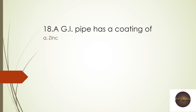Next question: The GI pipe has a coating of — zinc, lead, silver, or aluminum? GI pipe stands for Galvanized Iron pipe, and the coating is done with zinc. The right answer is zinc.